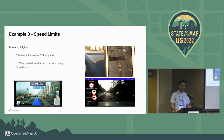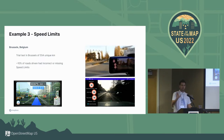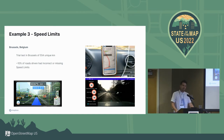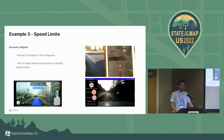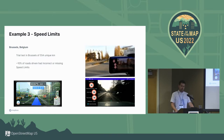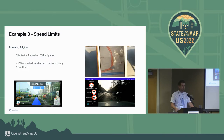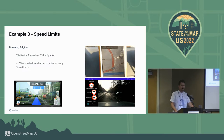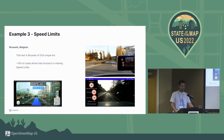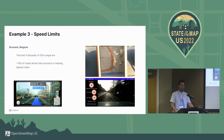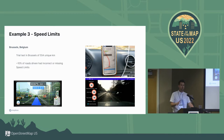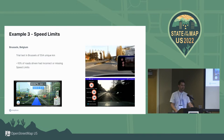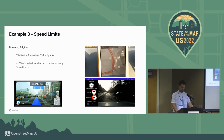Speed limits are very important for a number of reasons. We display current speed versus the speed limit for a road segment, and if they're incorrect, that's a poor experience. We did a test — roughly 500 kilometers in Brussels — to see how accurate we were. Roughly 10% of speed limits were either incorrect or missing altogether. This is another indicator of the quality of the trip experience in a particular geography.